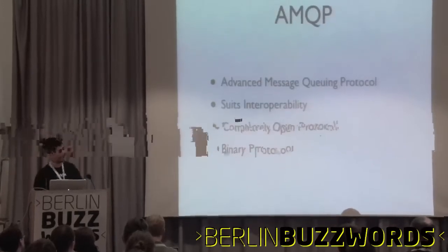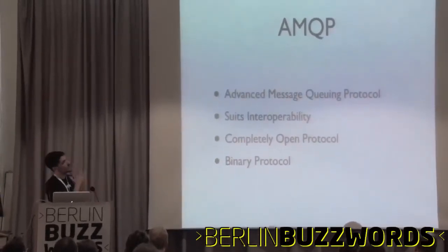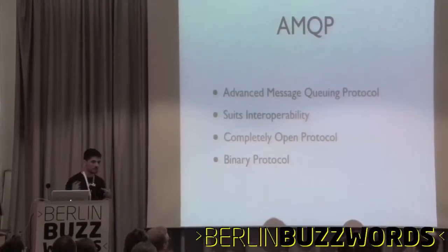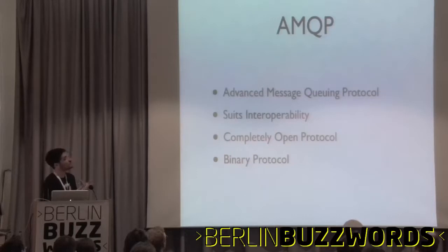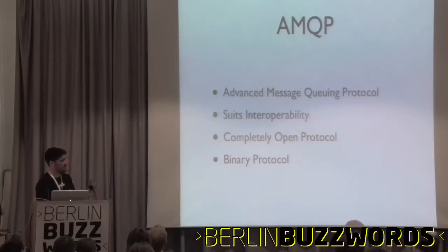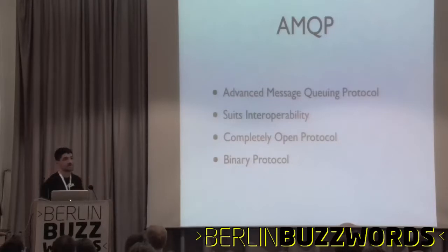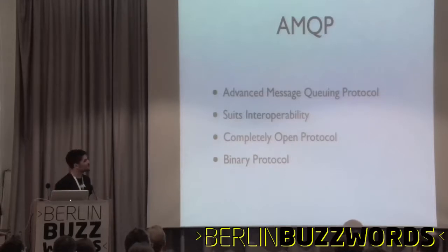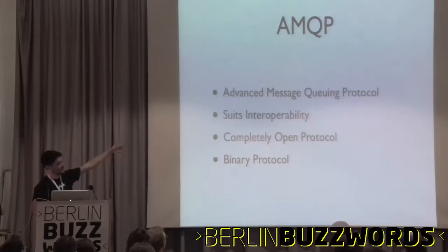What is AMQP? AMQP stands for Advanced Message Queuing Protocol. It's made for interoperability, so you can have all these languages talking together. It was also designed to solve the problem of vendor lock-in — if you have your messaging architecture behind TIBCO, JMS, or Microsoft MQ, you can use AMQP instead. If you can speak this protocol, you're free from vendor lock-in. It's a completely open protocol with a whole committee behind it, and it's a binary protocol.